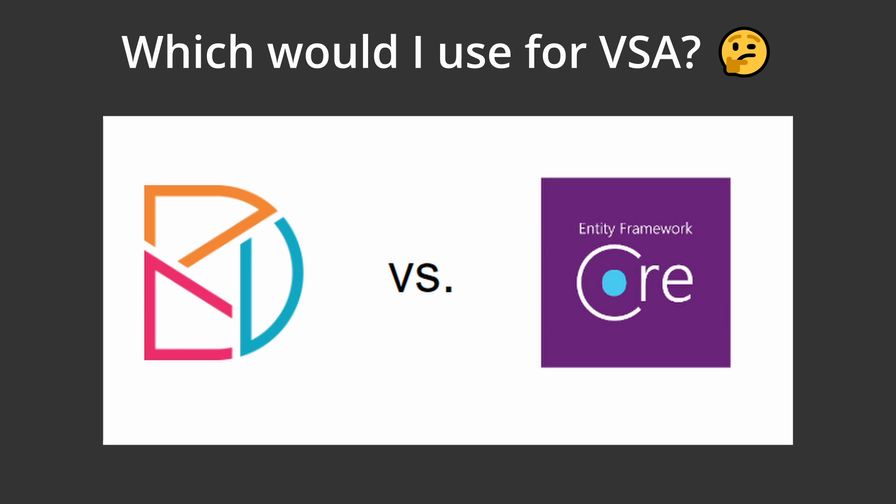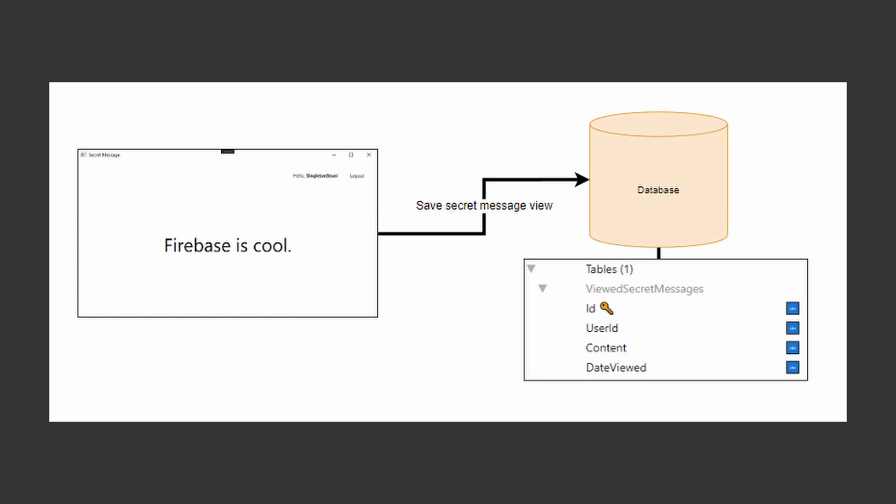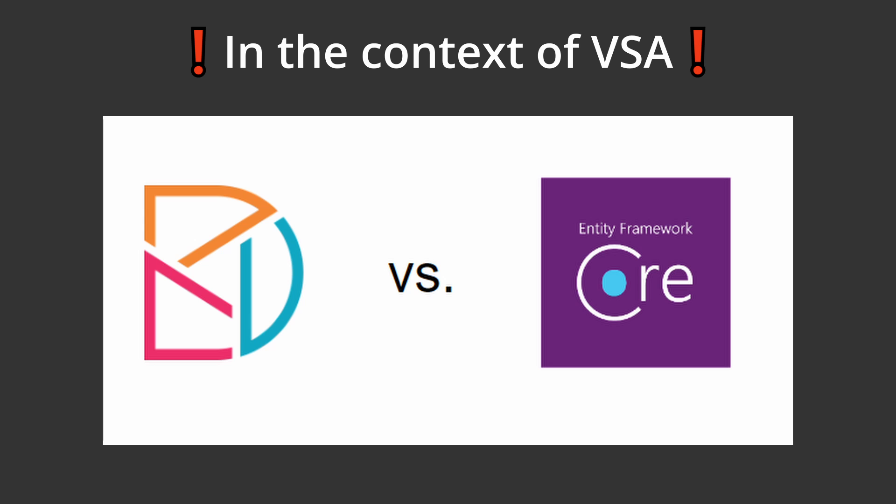To have a good comparison between NAD Framework and Dapper, we're going to implement the same functionality in Dapper that we implemented in NAD Framework — auditing secret message views to a database table whenever the user views the secret message. Just to clarify before we get started, we're not going to see an overall comparison between NAD Framework and Dapper; we're only talking in the context of vertical slice architecture.